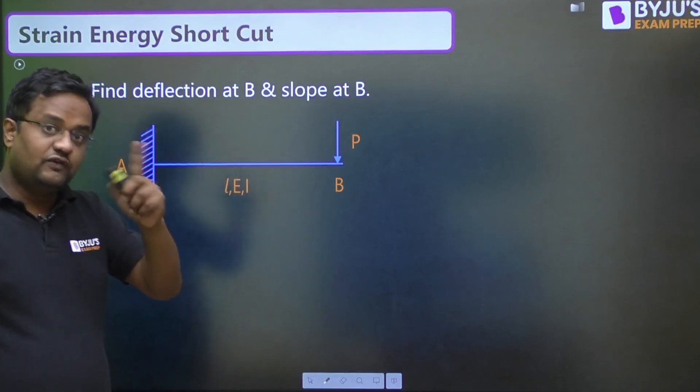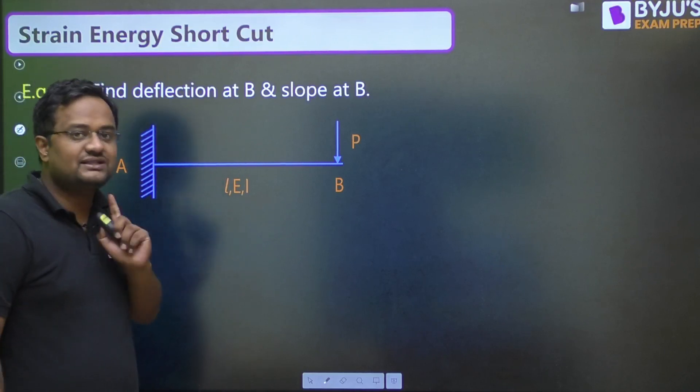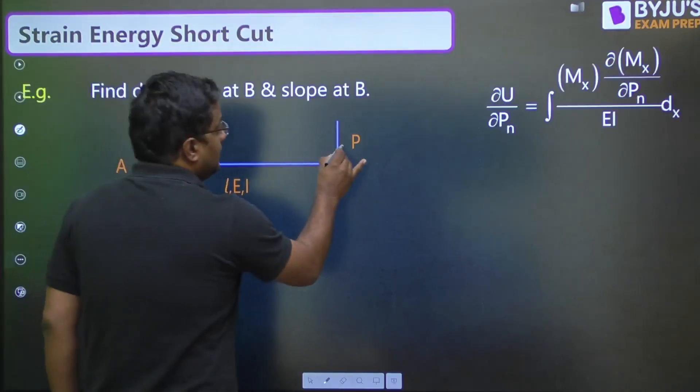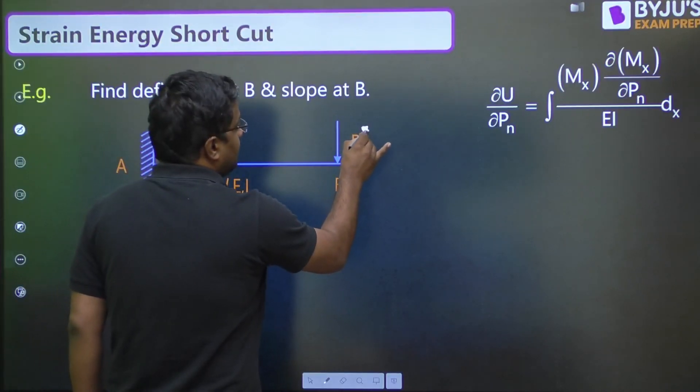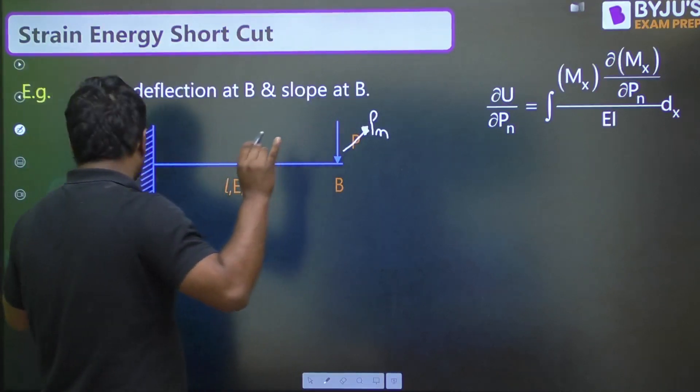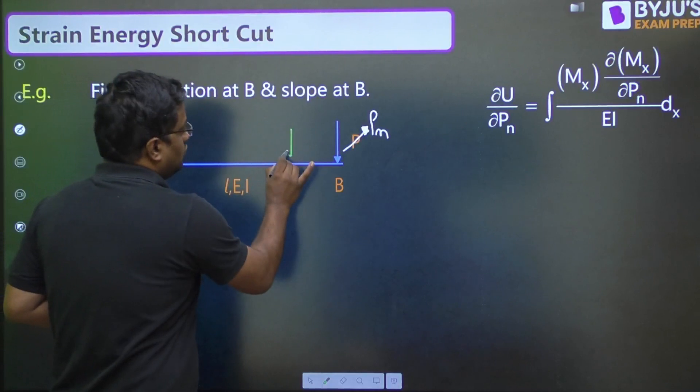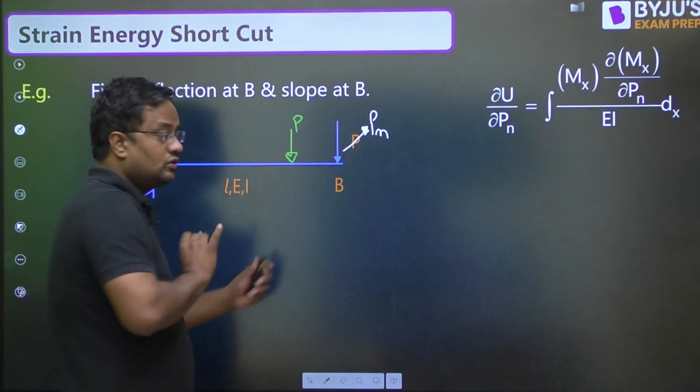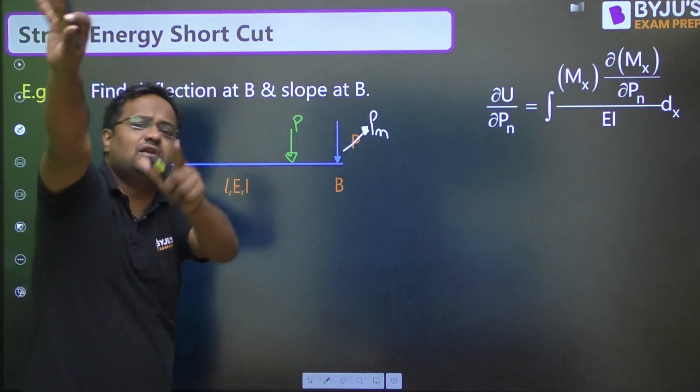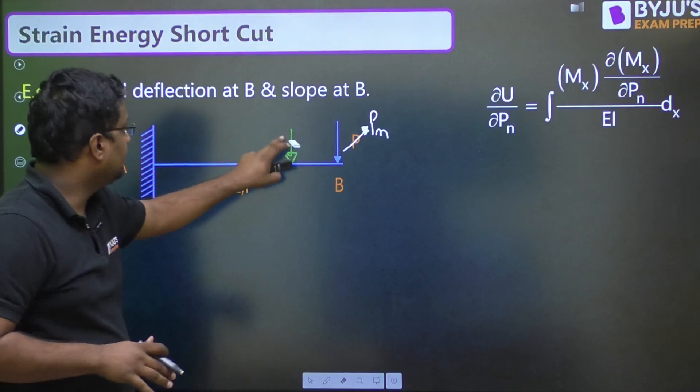Here, at the free end, deflection and theta is required. So, the first step of our short trick is, wherever you want to find deflection, name that load as PN. And that PN should not be acting anywhere else. If suppose here and here, both P are acting, so where the deflection is required, name it as a special name PN. At the end, we will make it P. Now, moving further.